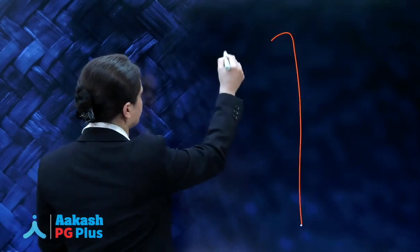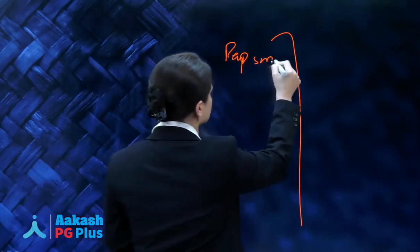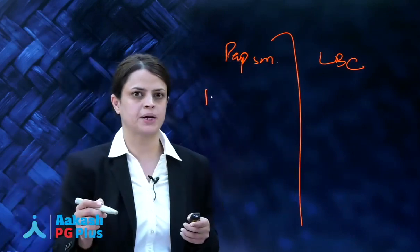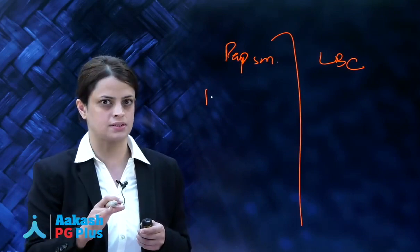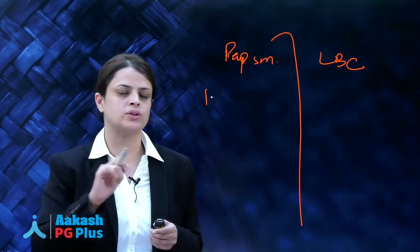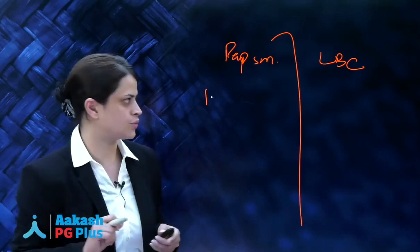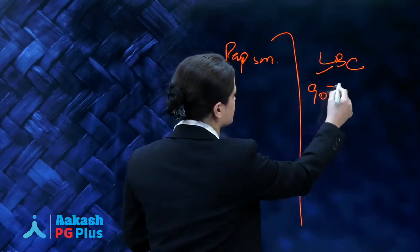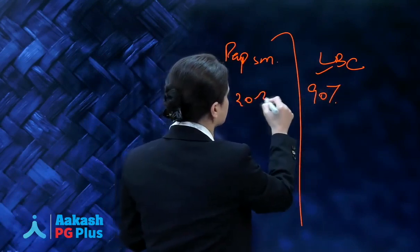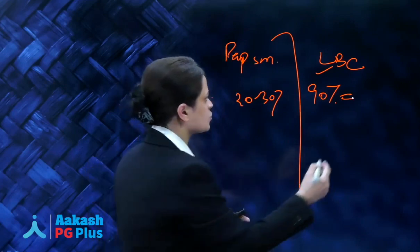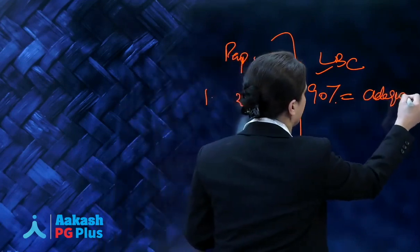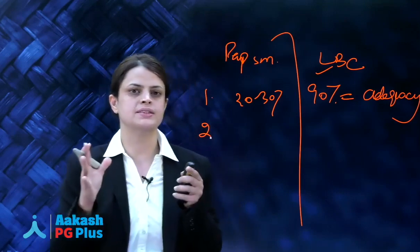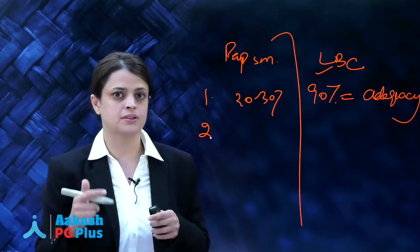Let us quickly consider the differences between conventional Pap smear and liquid-based cytology. With the conventional Pap smear, only about 20 to 30 percent of the cells picked up by the Ayre spatula or brush are actually transferred onto the slide. With liquid-based cytology, almost 90 percent of the cells are transferred into the preservative solution, leading to higher sample adequacy.